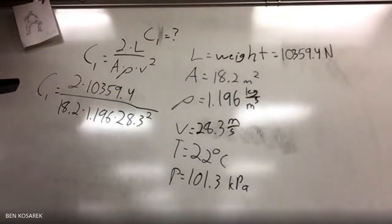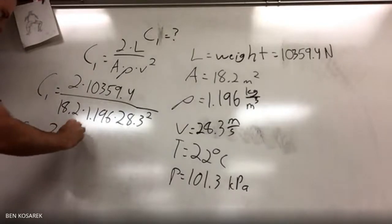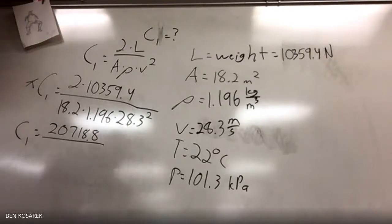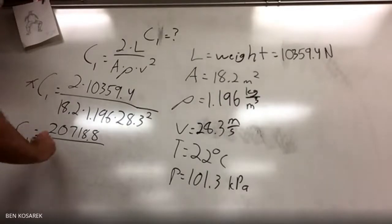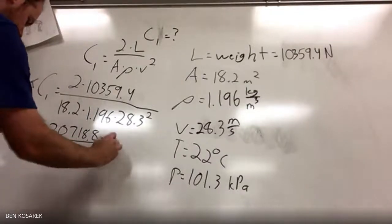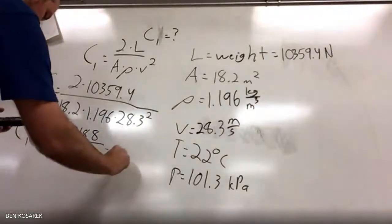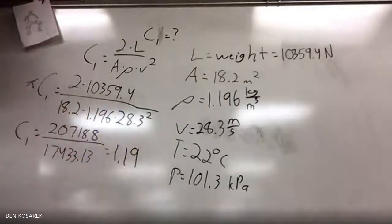At the top we have 20,718.8. Then we have 18.2 times 1.196 times 28.3 squared, which gives us 17,433.13. When you plug all that in, you get 1.19 as your coefficient.